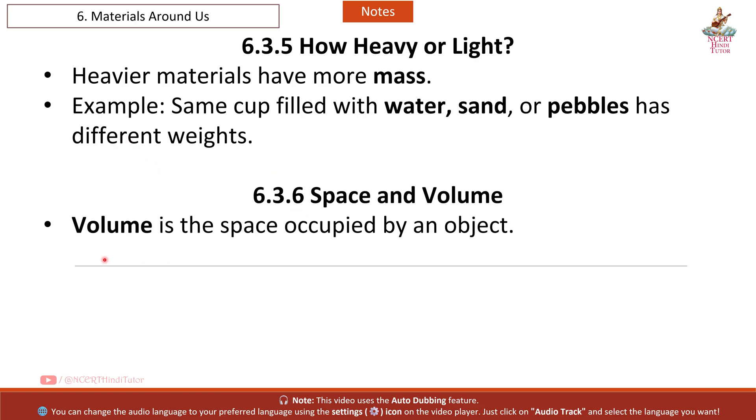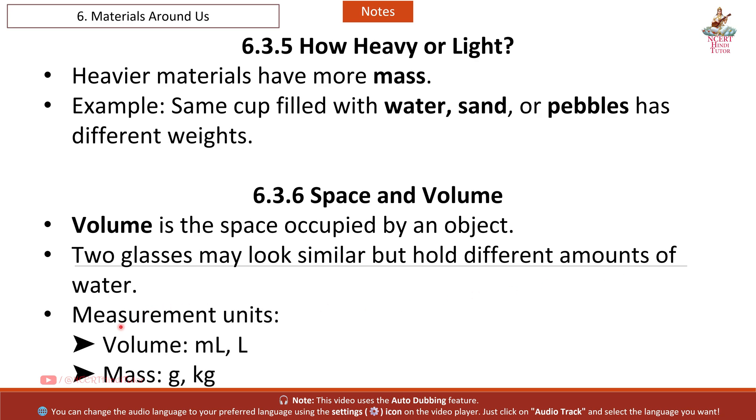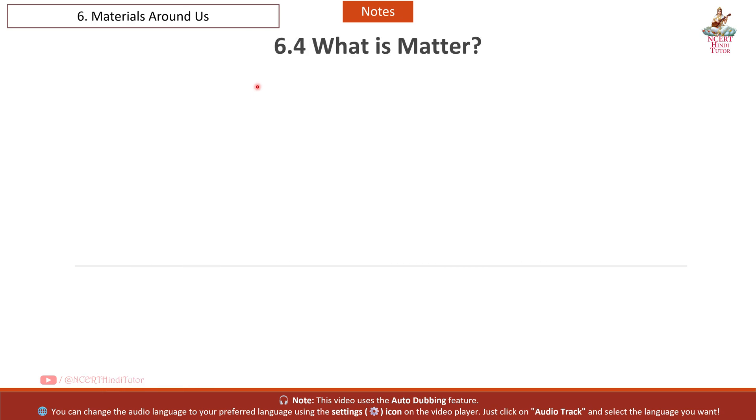6.3.6 Space and Volume. Volume is the space occupied by an object. Two glasses may look similar but hold different amounts of water. Measurement units: volume: milliliter and liters, and mass: gram and kilogram.